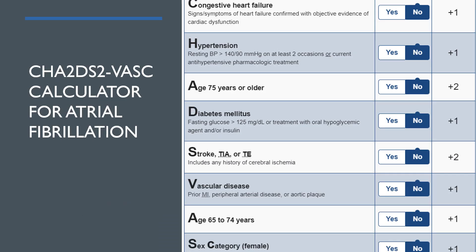The CHA2DS2-VASc calculator for atrial fibrillation: this scoring method helps to reduce the incidence of stroke and tailor anticoagulant therapy. Make sure to review this scoring tool because it is a very important clinical tool for managing patients with atrial fibrillation.